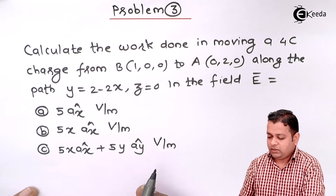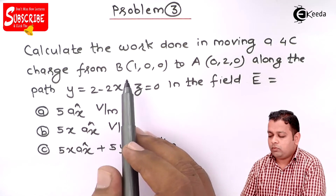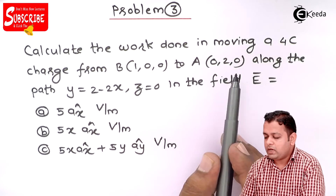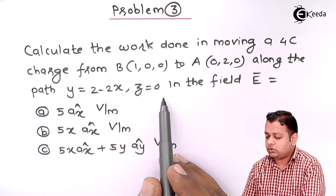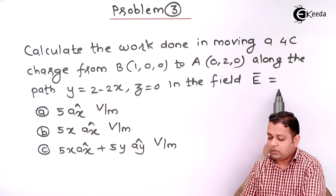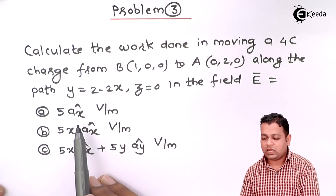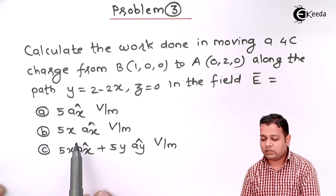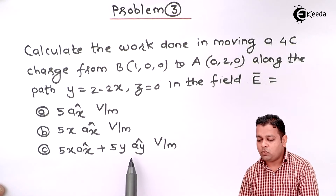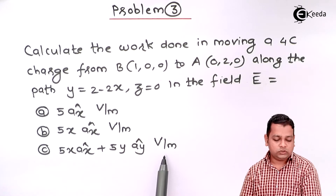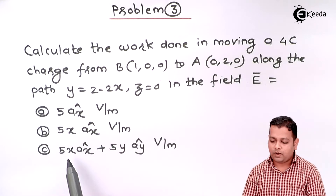This is the problem statement: Calculate the work done in moving a 4 coulombs of charge from point B (1,0,0) to point A (0,2,0) along the path Y = 2 − 2X, Z = 0 in the field E-bar represented in three parts. Part A: E = 5 ax̂ volts per meter. Part B: E = 5X ax̂ volts per meter. Part C: E = 5X ax̂ + 5Y aŷ volts per meter. So here we see the electric field is changing from part A to part B to part C.